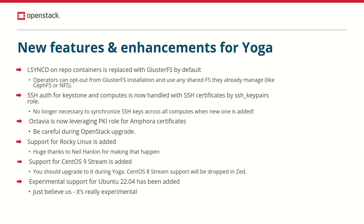Now let's talk about project achievements during the Yoga cycle. First of all, we finally removed LSYNC from repo containers. The repo container is used for building Python wheels to reduce outgoing traffic and spend less time building packages for installation onto the target hosts. When wheels were built, we were syncing between several repo containers using LSYNC. However, there were several issues with that.